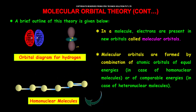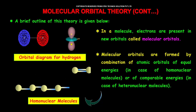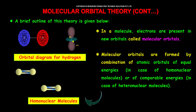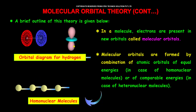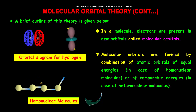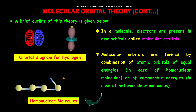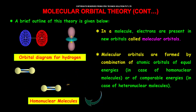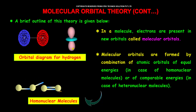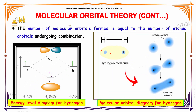Here is the brief outline of the theory. In a molecule, the electrons are present in new orbits called molecular orbits. The molecular orbitals are formed by the combination of atomic orbitals of equal energy — in case of homonuclear molecules — or of comparable energy in the case of heteronuclear molecules. The number of molecular orbitals formed is equal to the number of atomic orbitals undergoing the combination.